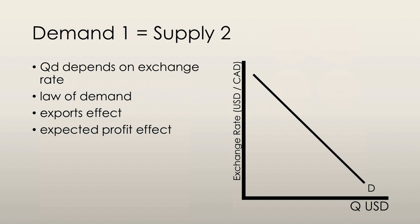The law of demand for foreign exchange states that the higher the exchange rate, the lower is the quantity of currency demanded. The export effect states that the larger the value of our domestic exports, the larger is the quantity of our country's currency demanded. The value of our exports depends on the prices of these goods as expressed in the foreign buyer's currency, and these prices depend on the exchange rate. Whoever is buying from abroad is not going to be looking at prices in Canadian dollars — they're going to look at prices in terms of their own currency to see how much they actually have to pay, and that's what determines our exports.